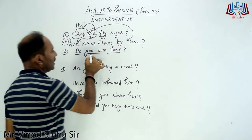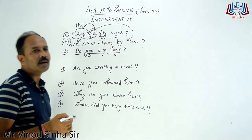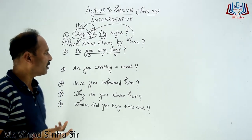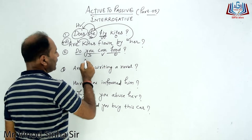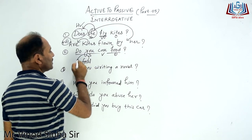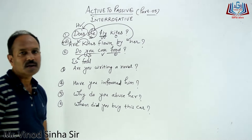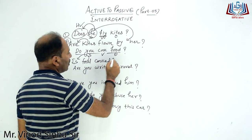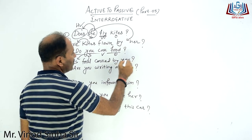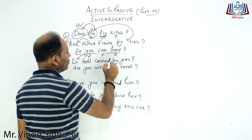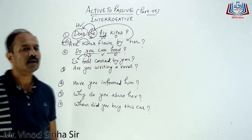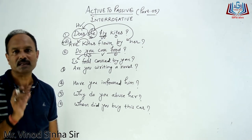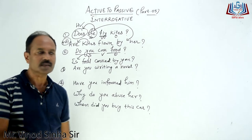यह भी आपको पता लग जाएगा: यह Present Simple का है। आपको identify करना है subject, verb, object। Present Simple का मतलब 'is/are' का प्रयोग होना है, और third form का होना है। अब food को मैं इधर लेके आता हूँ। इसके लिए helping verb क्या use करना पड़ेगा? 'Is'। So: Is food cooked by you? तो क्या बन गया Hindi — तुम खाना पकाते हो, और क्या खाना पकाया जाता है तुम्हारे द्वारा। बिल्कुल Hindi वैसी रहती — Present Simple में 'ता है, ती है' जैसे आता है।